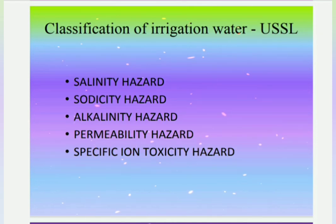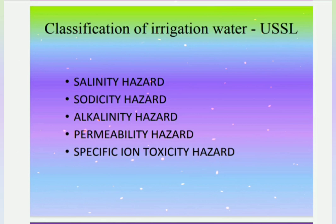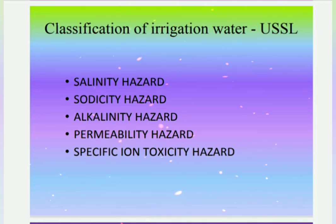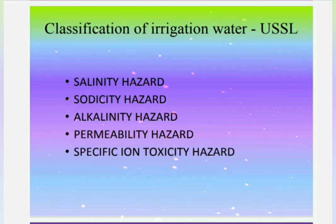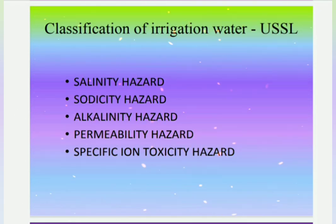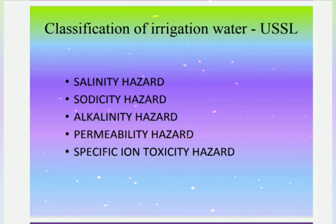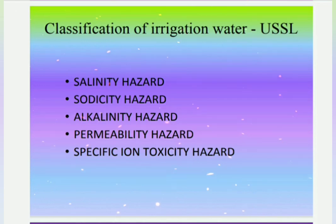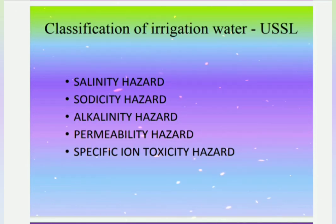The quality of irrigation water is evaluated mainly by the quantity of dissolved salts and the proportion of anions and cations in irrigation water. Various criteria are considered in evaluating the quality of irrigation water: salinity hazard, sodicity hazard, alkalinity hazard, permeability hazard, and specific ion toxicity hazard.